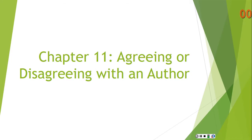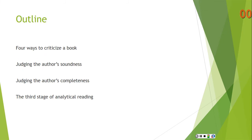This is the final lecture on how to read a book that I will give. It's chapter 11, agreeing or disagreeing with an author. You do not need to read chapter 12 or the rest of the book, though you can if you would like. I will talk about four ways to criticize a book, then get into the details of those four ways by judging the author's soundness and judging the author's completeness, and finally summarize the third and final stage of analytical reading.